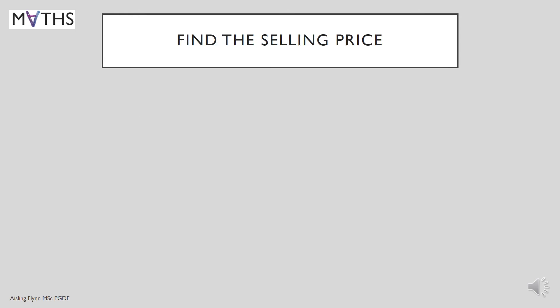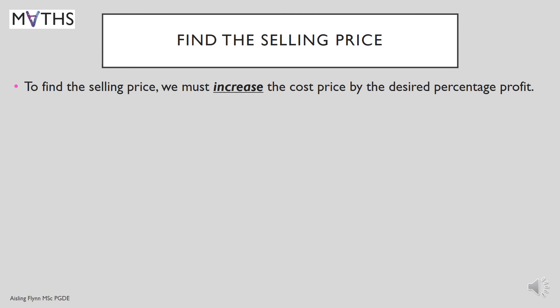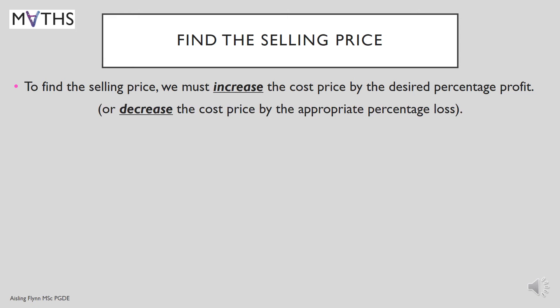Now, a different style of question: finding the selling price. To find the selling price, we must increase the cost price by the desired percentage profit. So we're still working with percentages. For profit, we increase the cost price. And for loss, we decrease the cost price by the appropriate percentage loss.